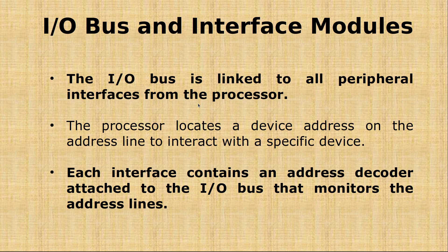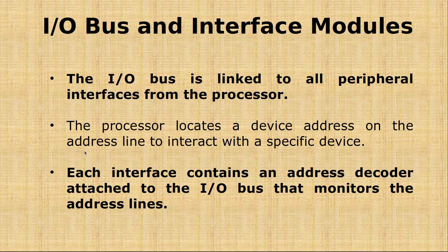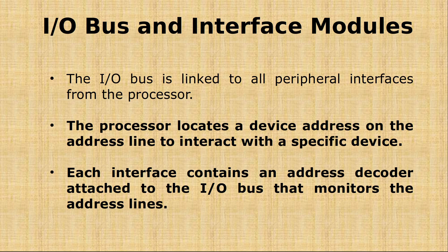Different types of input-output devices are connected to the processor through their interfaces. Each peripheral device sends its address to the interface. The interface receives the address and checks the address line to verify whether it is correct. If the address is correct, it decodes the address line and connects to the processor; if not, it rejects it.